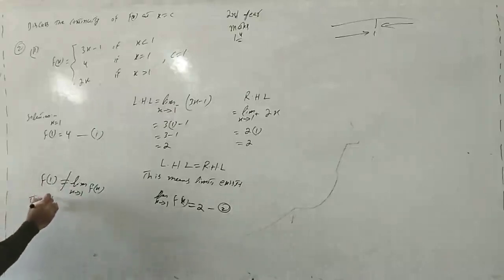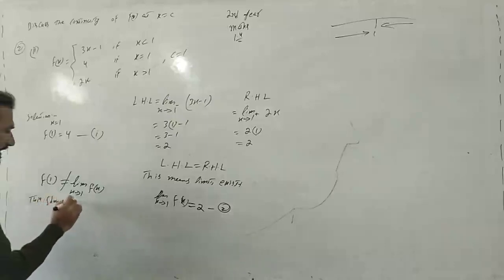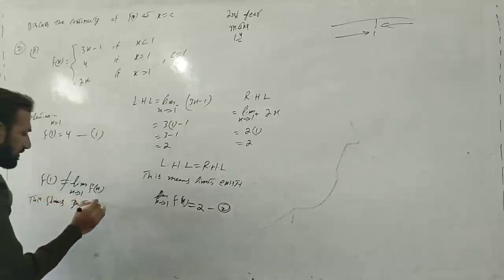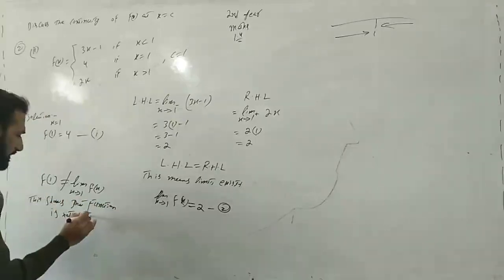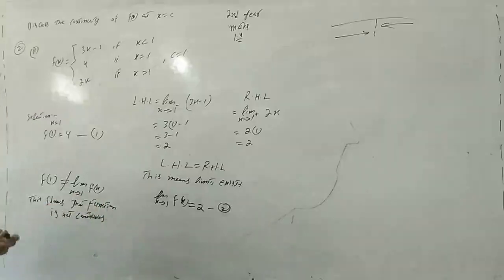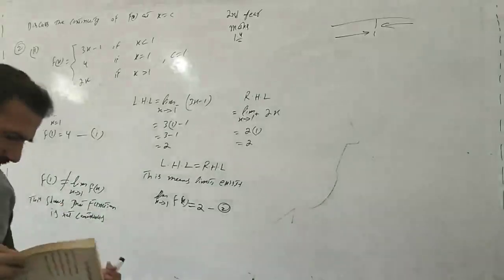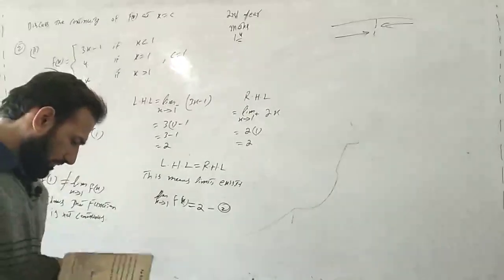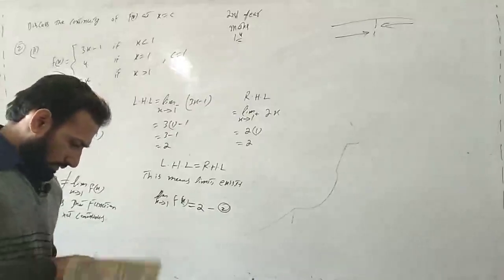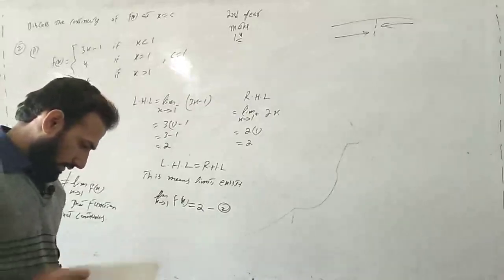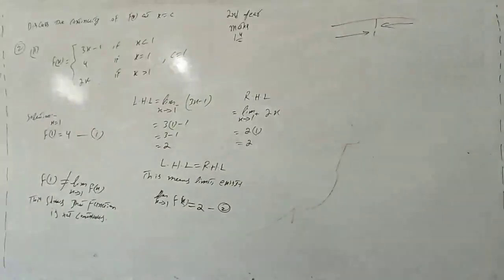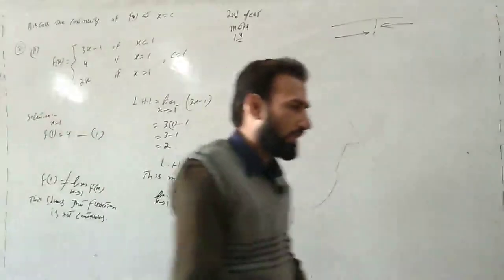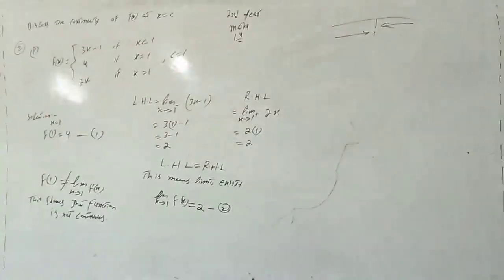Teesri condition fulfill nahi hui to isse murad: function is not continuous. This shows that function is not a continuous function — it is a discontinuous function. Exercise 1.4, Question 2 part 2 — answer: not a continuous, i.e., discontinuous function. Allah Hafiz.